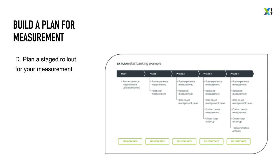In later phases, you have the opportunity to add additional use cases like role-based management views, add touchpoints like contact center measurement, and begin adding more sophistication such as closed-loop follow-up or case management. Text and statistical analysis are typically added later in programs, which is helpful because they can build on what came before. Critical to this plan is including delivery dates and key milestones so you have a plan you can track against and drive progress towards.